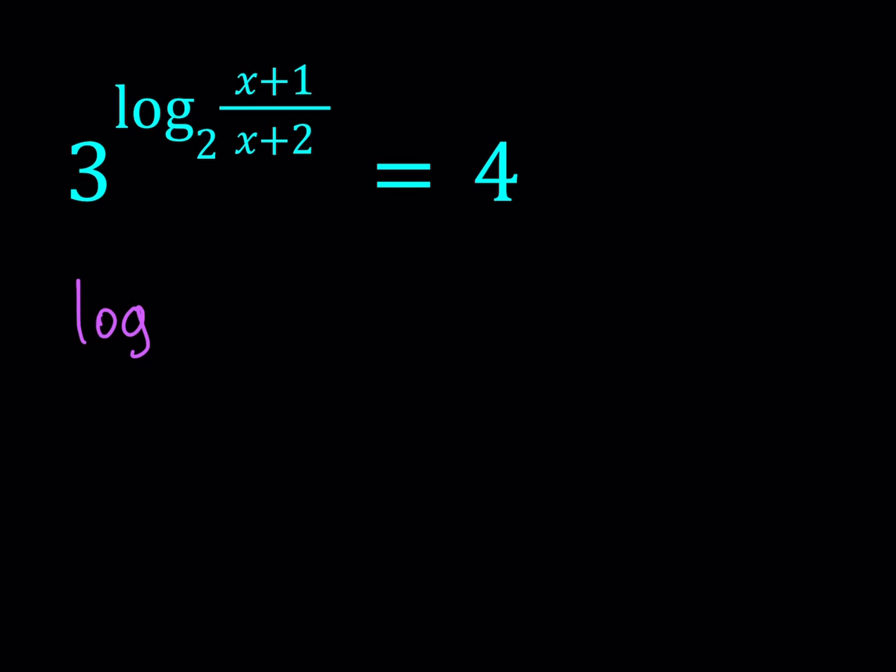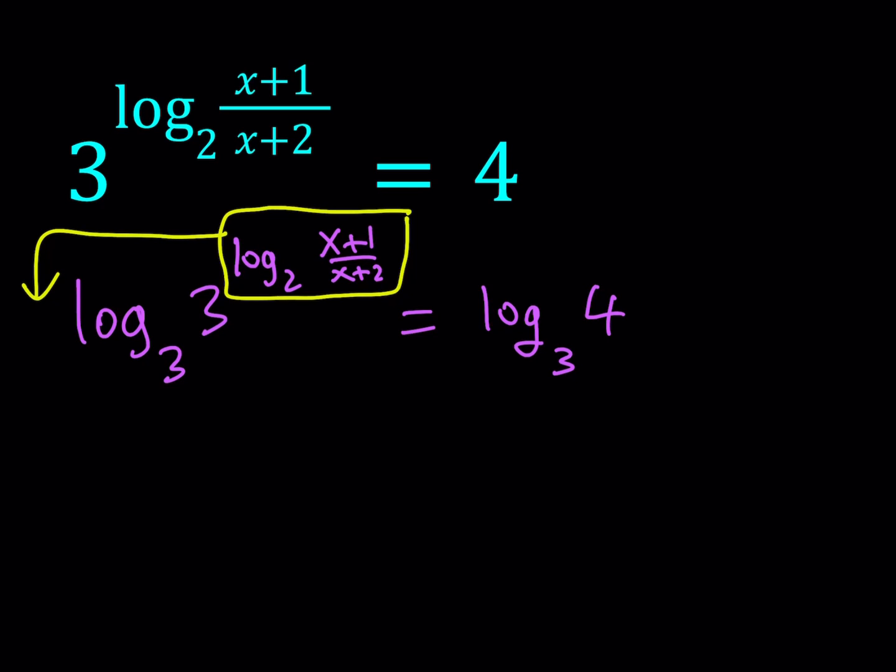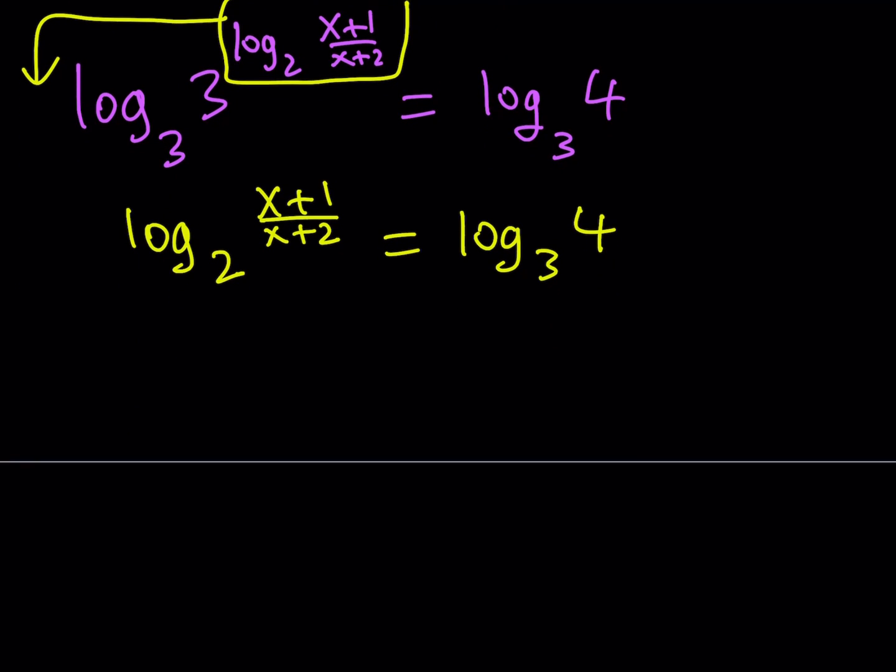So I'm going to be logging both sides with base 3 and that's going to give me something that looks like this. The left hand side kind of looks a little confusing but don't worry we're going to simplify it. Now this expression here is basically a power of 3 and by power rule I can just go ahead and move it. But when I move that as a multiplier by log 3 base 3 it just becomes 1 times that so I end up getting log of x plus 1 over x plus 2 with base 2 is equal to log 3 4. Now if we had bases that are the same or they were similar like 2 and 4, 4 and 8 and so forth then it will be a little easier but that's okay we can still do it.